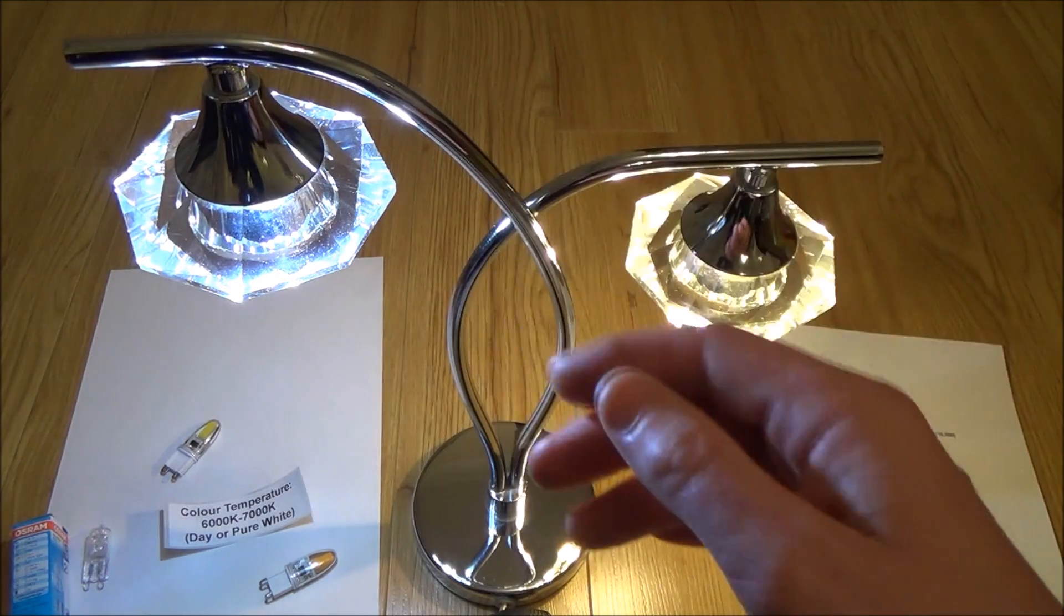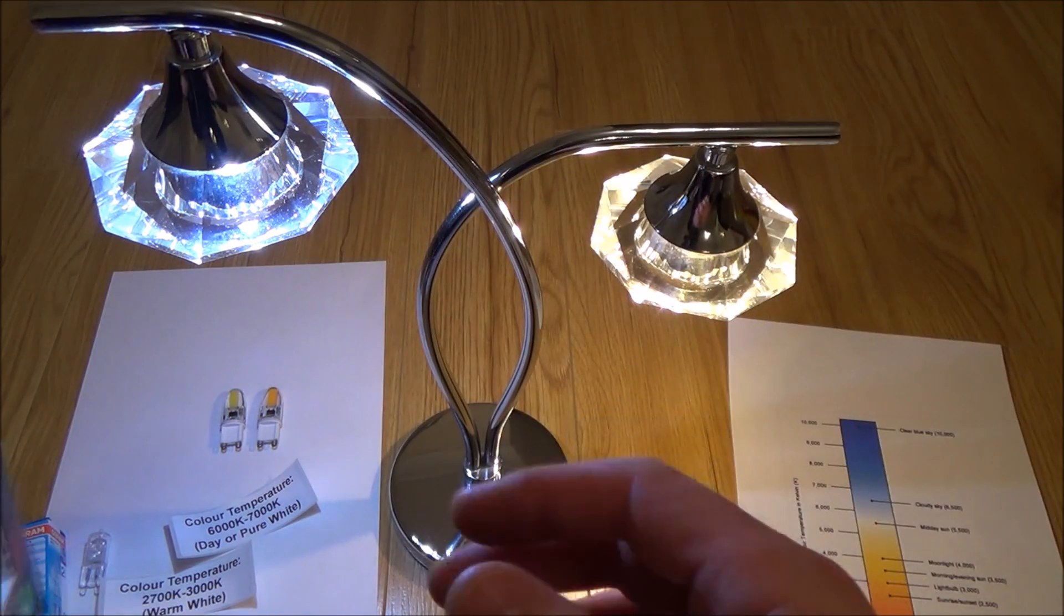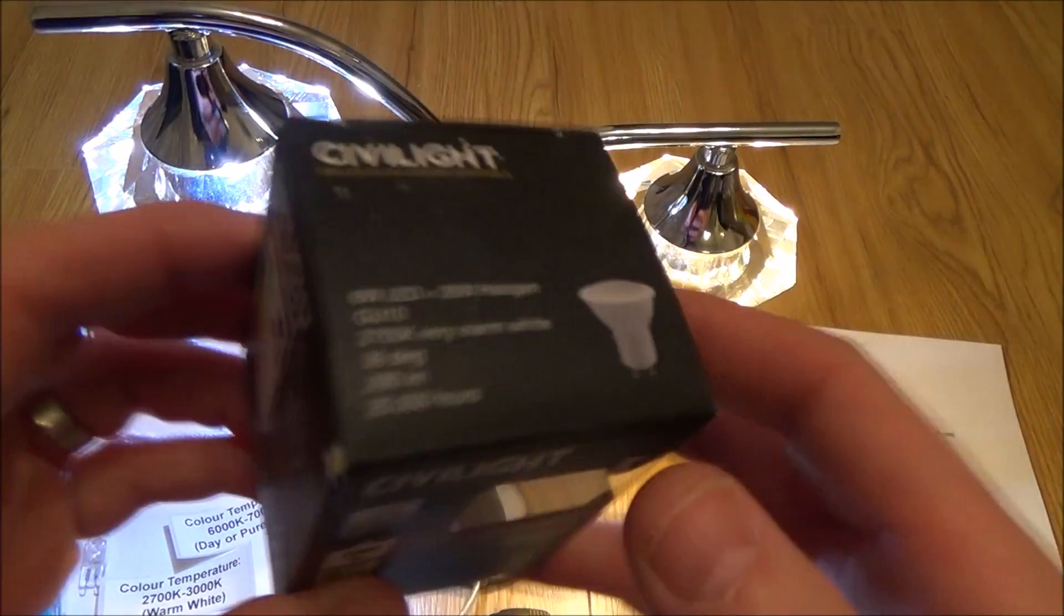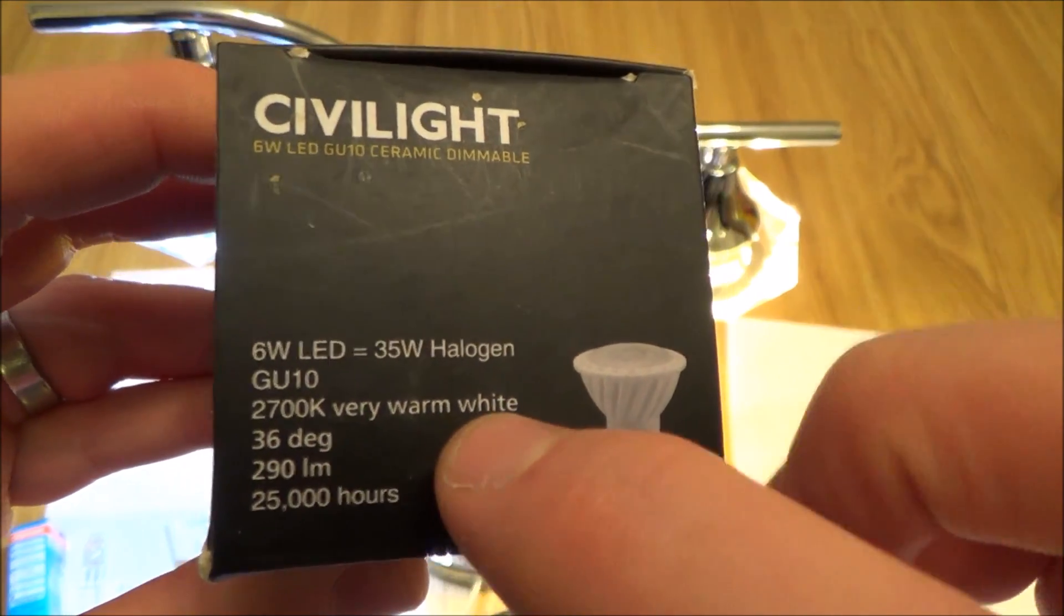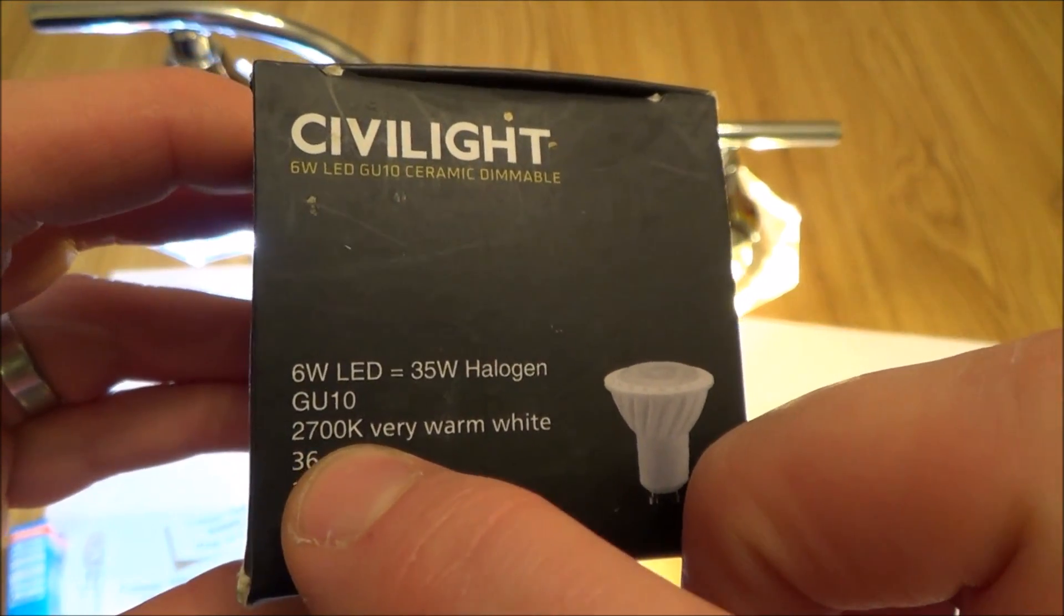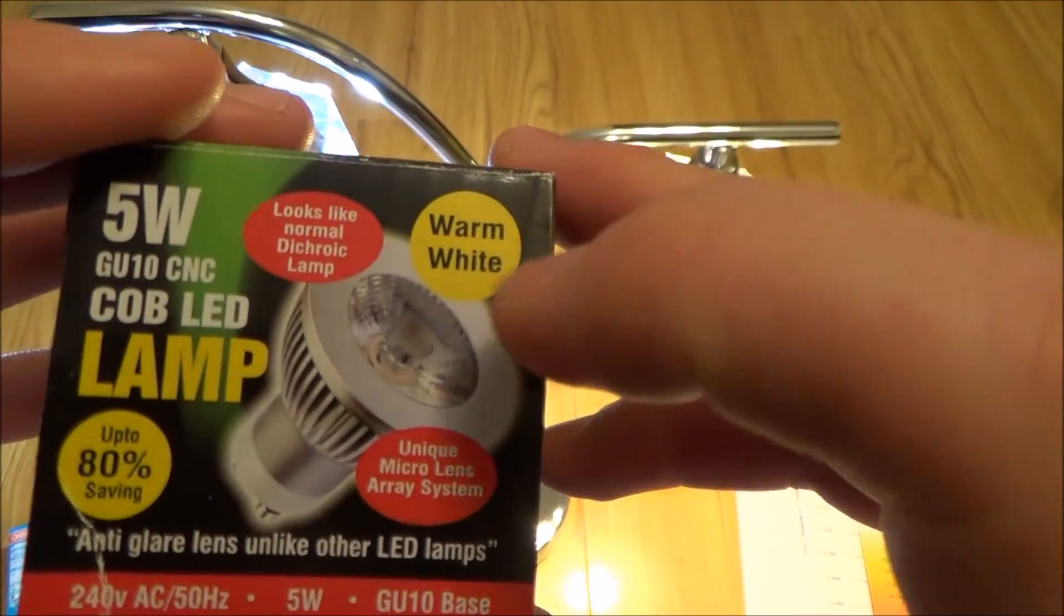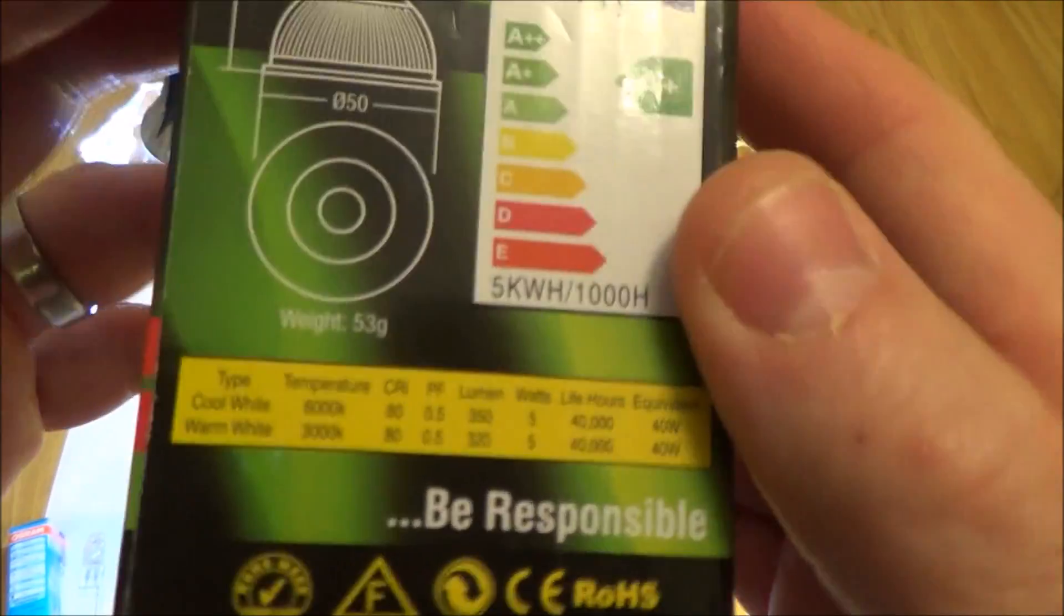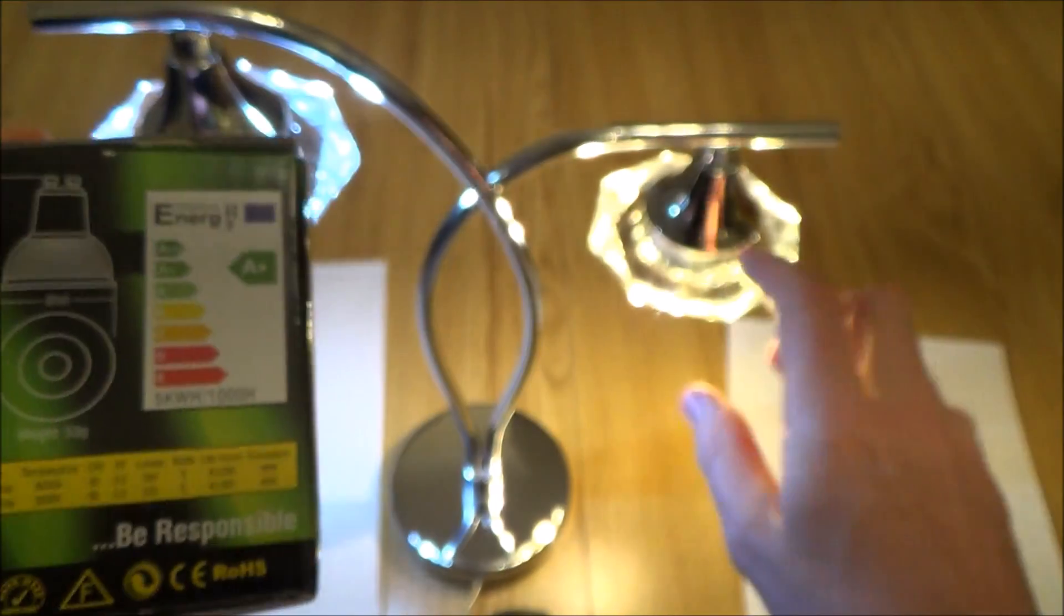When you look at your LED bulbs you will see the K number on them and then it will give you an idea of what it's like. So for example here, this is a GU10 fitting and if you have a look it says 2700K very warm white. So you know by 2700K it's going to be a yellowy color. And then if you have a look here warm white, and then it would say here what warm white means, 3000K, so it's going to be slightly whiter than this, not quite as yellow as this.